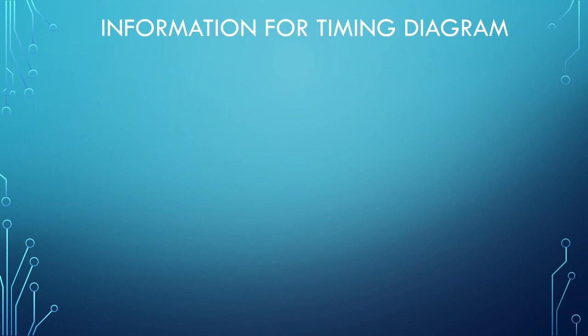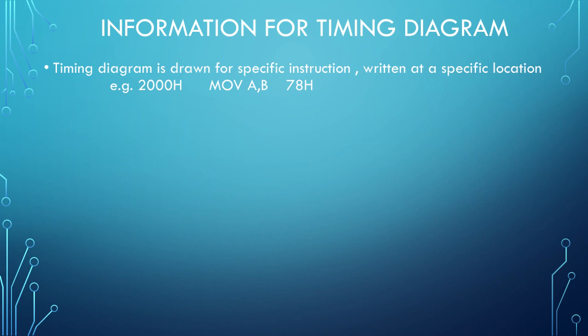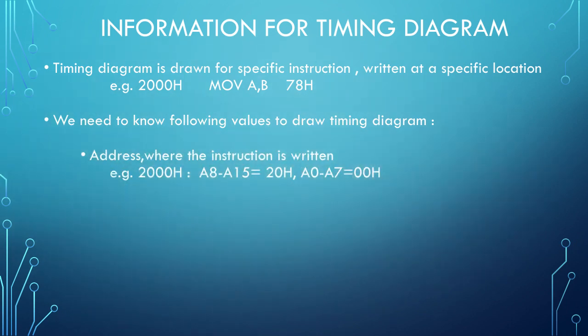Coming to the discussion of how the timing diagram is drawn — the timing diagram is drawn for a specific instruction written at a specific memory location. Here we have taken an example where the instruction is written at 2000h. The instruction is MOV A,B and its opcode is 78h. So at memory location 2000h, 78h is written. To draw the timing diagram, we need the address: 2000h, where higher order address is 20h (A8 to A15) and lower order address is 00h (A0 to A7).